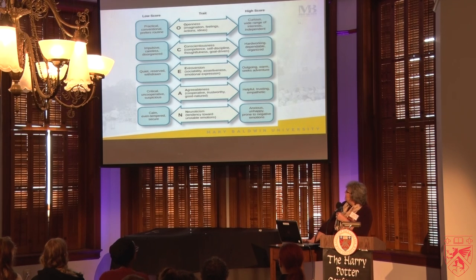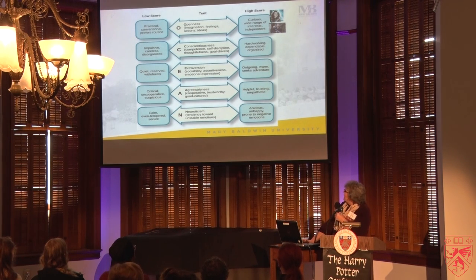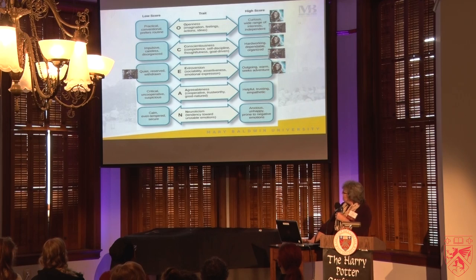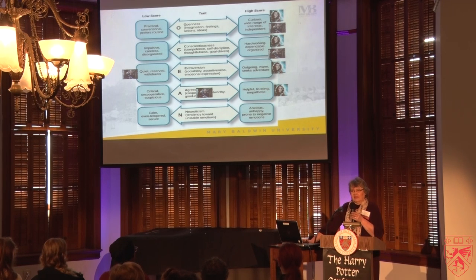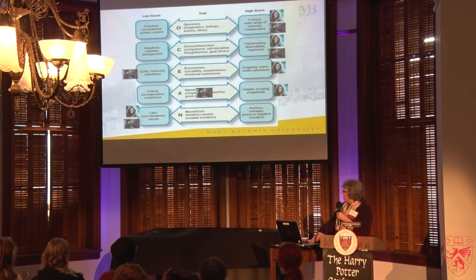Going back to Hermione and Tris and how they fall on these spectrums: I think they're both clearly very intelligent, so I'd put them very high on openness. I'd also put them very high on conscientiousness — hardworking and dependable. They're different in terms of extroversion: Hermione is much more warm and outgoing, whereas Tris is much quieter and reserved by nature. They're also a bit different on agreeableness — Hermione would rate very highly, while Tris is probably more in the middle ground; she's not always the most agreeable person. On neuroticism, they both can show this bravery and calmness in the face of danger that served both characters very well.